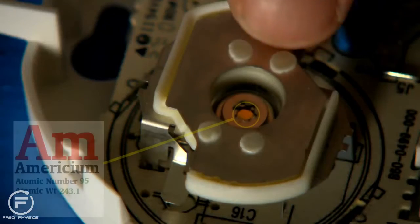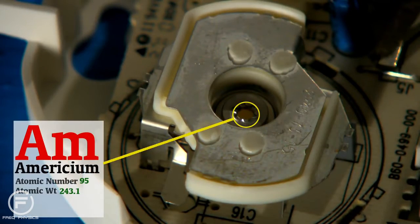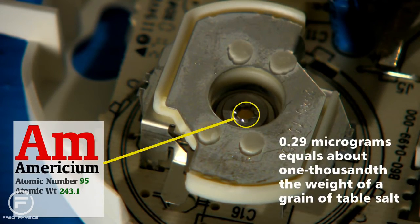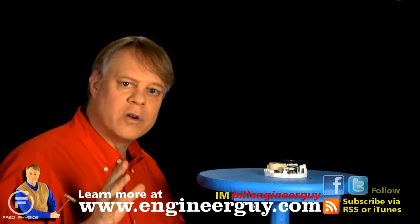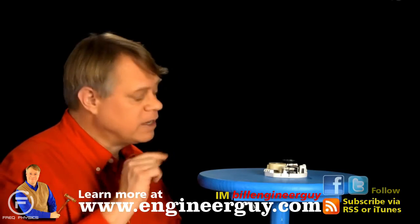Tucked in here lies about one microcurie of radioactive americium-241. That's about .29 micrograms. That tiny bit of radioactive material generates a small current that makes the detector work.